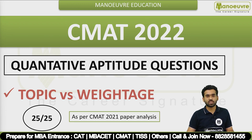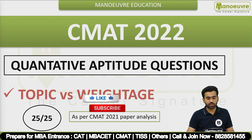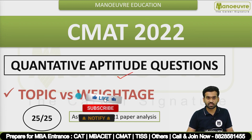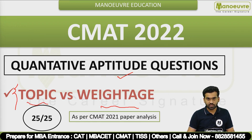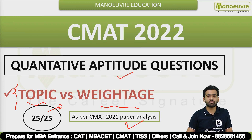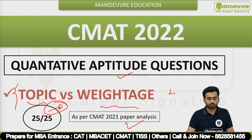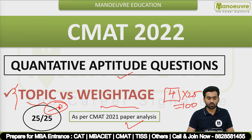Hi guys, welcome to Manure Education. In this video we will discuss quantitative aptitude questions for your upcoming CMAT exam, focusing on topic versus weightage using previous year paper analysis. We have 25 questions for quant, one question is for 4 marks, so 25 into 4 gives us 100 marks total.